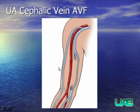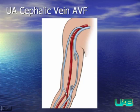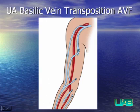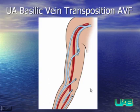An upper arm cephalic vein fistula is an end-to-side anastomosis between the cephalic vein or a venous branch, such as the medial cubital vein, into the brachial artery slightly above the antecubital fossa. A basilic vein transposition is a larger procedure where multiple branches from the basilic vein are ligated, the basilic vein is freed up and tunneled beneath the skin more laterally, and then an end-to-side anastomosis is performed.